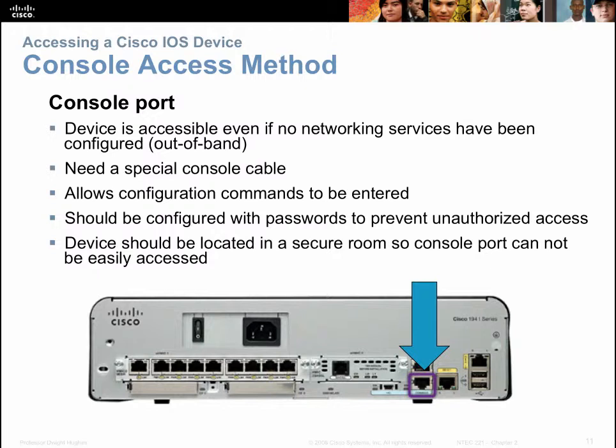Cisco devices come blank with no configuration, so there would be no way to connect through the other methods initially. Cisco ships a special cable with each device for the console port, and you'll need to connect it to a port on your PC. Some newer routers and switches also have a USB console port, allowing you to use a mini USB cable into the USB port on your PC, since many newer PCs no longer have a DB9 serial port.